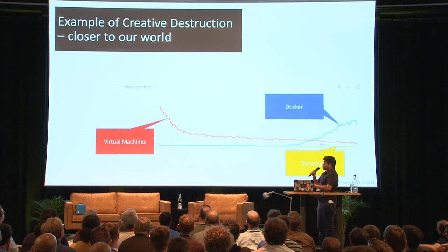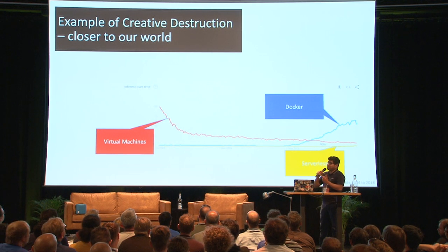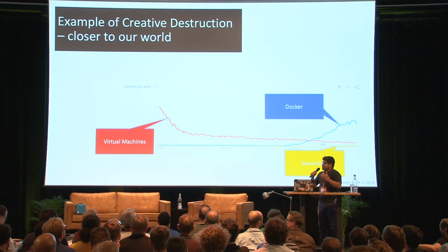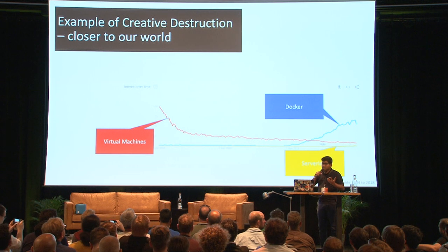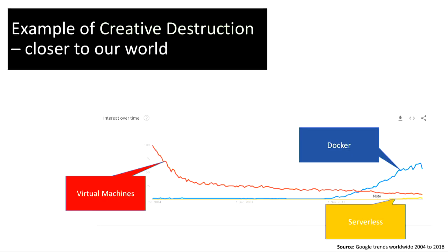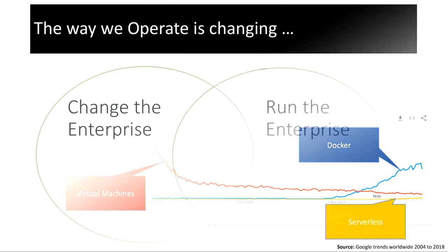This is Google Trends from 2004 onwards. Virtual machines were really the craze back then. Then you can see Docker and serverless sort of raising their heads now. I don't know where that will go.